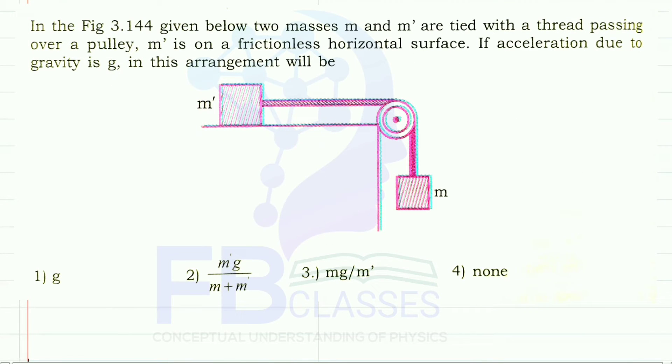I'm going to read the question. In the figure 3.144 given below, two masses m and m' are tied with a thread passing over a pulley. m' is on a frictionless horizontal surface. If the acceleration due to gravity is g, what will the acceleration in this arrangement be?